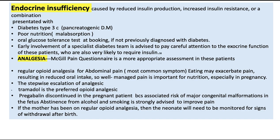Endocrine insufficiency is complex, caused by reduced insulin production, insulin resistance, or a combination of both. Patients usually present with type 3c (pancreatogenic) diabetes mellitus with poor nutrition and malabsorption. An oral glucose tolerance test at booking should be advised if not previously diagnosed with diabetes. Early involvement of a specialist diabetes team is advised, as these patients are very likely to require insulin.